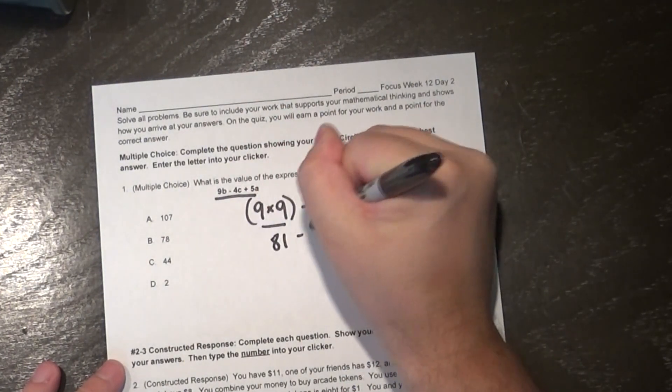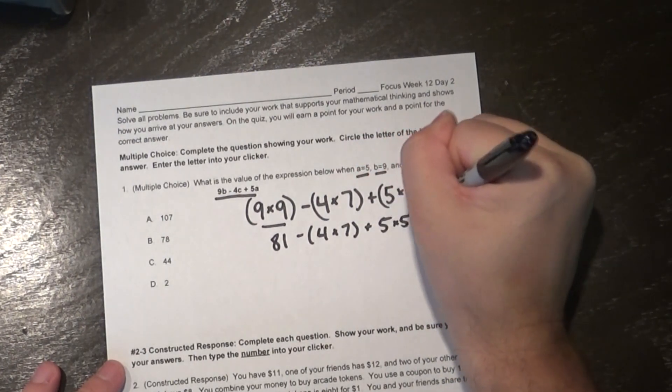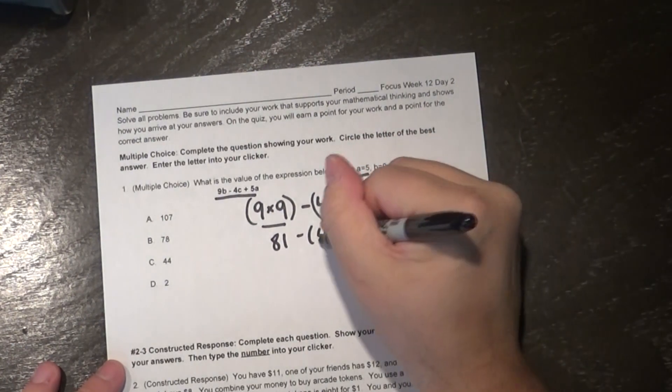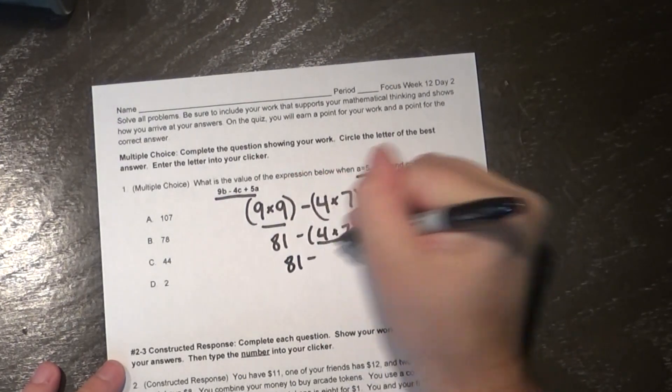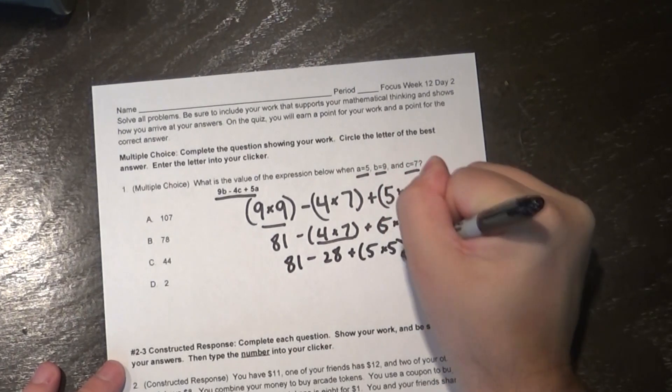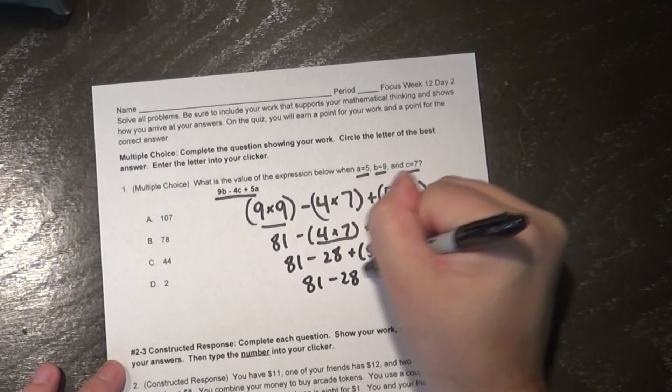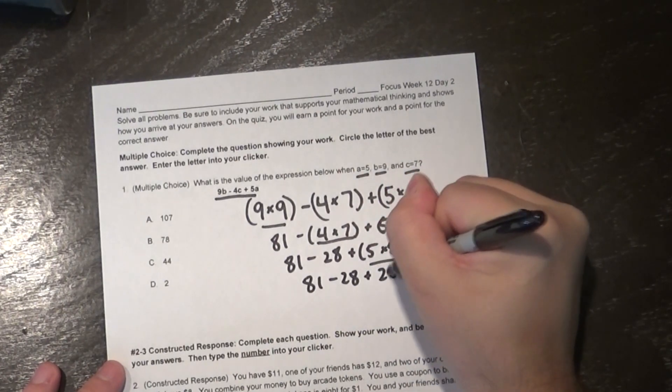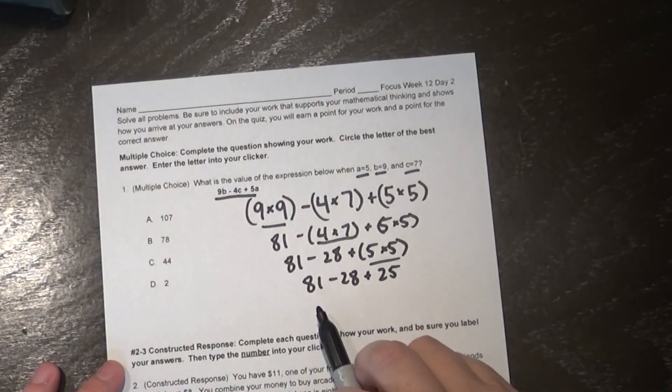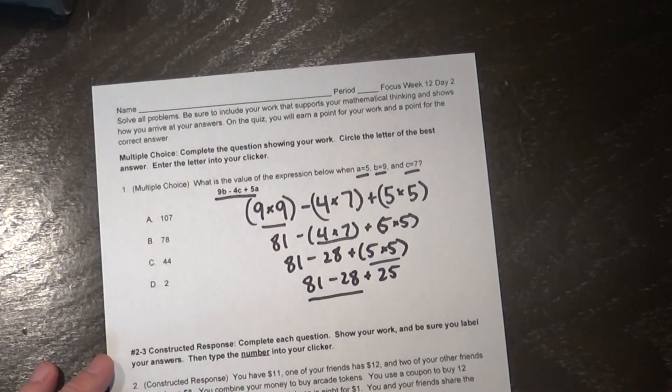So I have 9 times 9, that's 81 minus 4 times 7 plus 5 times 5. Okay next I'll do 4 times 7, that's 81 minus 28 plus 5 times 5. Next I'll do 5 times 5, that's 81 minus 28 plus 25. Now I have to do my subtraction first because I use subtraction and addition in the same step and work from left to right.